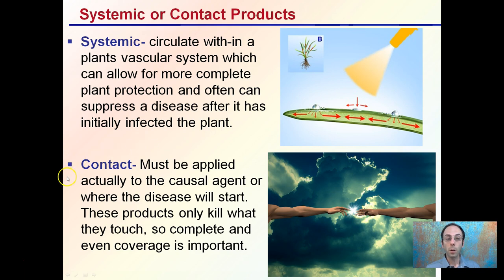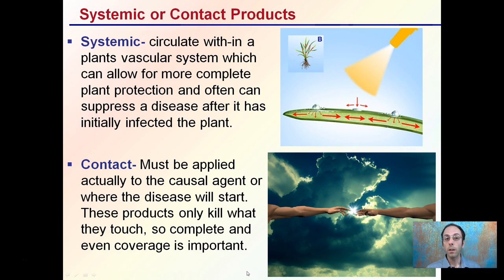The opposite of systemic is contact products. These must be applied directly to the causal agent — they must come in direct contact with the pest or where the disease will start. Contact products only kill what they touch, so complete and even coverage is critical. Three droplets of a contact product would only kill the three specific areas where it touches the plant. The advantage is no residuals in the plant; the disadvantage is that it's on the applicator to ensure even coverage.